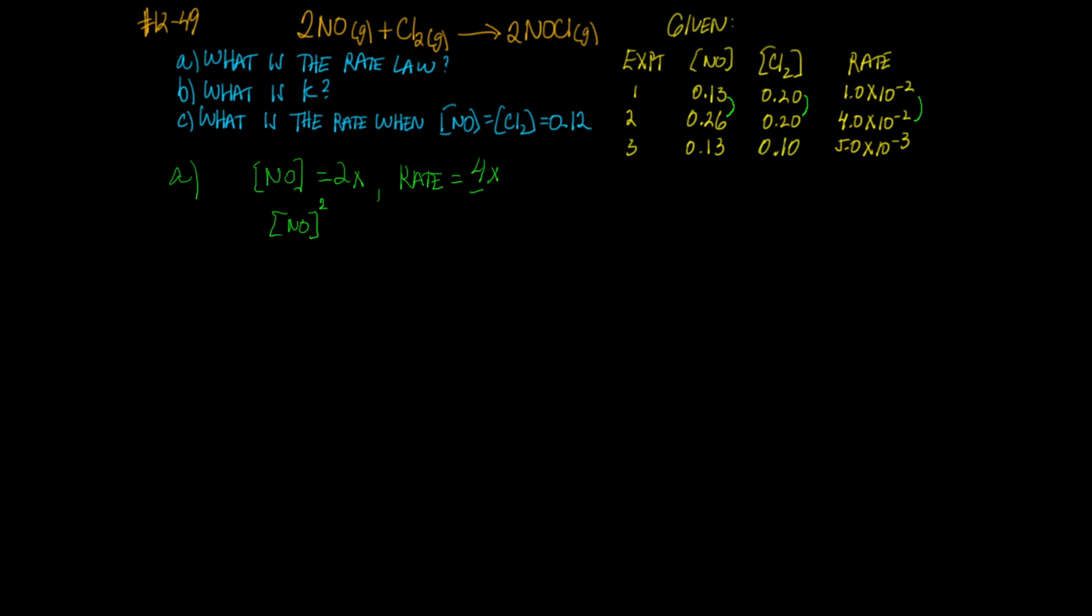Now we want to find two experiments where NO is remaining constant. Experiments 1 and 3 have NO constant at 0.13 molar. If we look carefully at experiments 1 and 3, we can see that the chlorine concentration is 0.2 and 0.1—that's an exact doubling. Experiment 1 is 0.20, experiment 3 is 0.10, and that's a factor of 2. So chlorine is doubling. What happens to the rate?